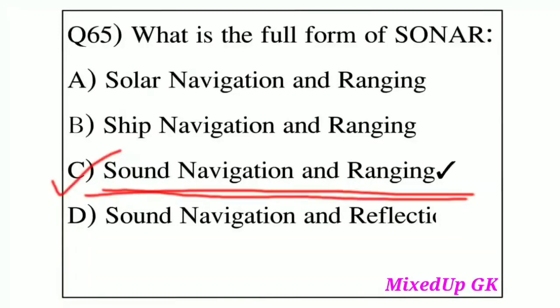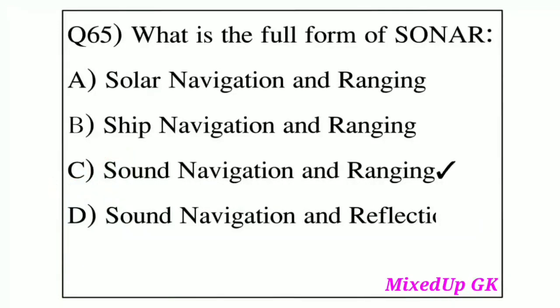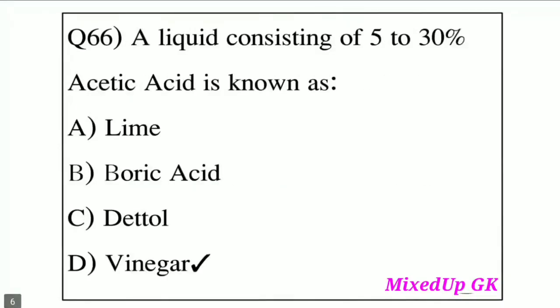Question number 66: A liquid consisting of 5 to 30 percent acetic acid is known as what? Option A: Lime. Option B: Boric Acid. Option C: Dettol. Option D: Vinegar. The answer is Option D, Vinegar.